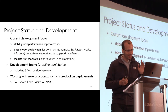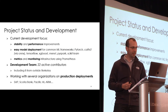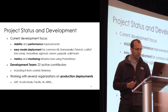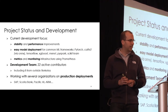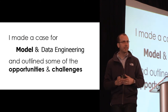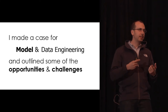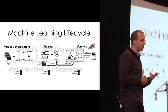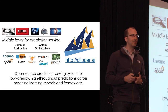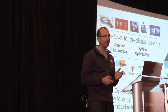We've focused on easy model development, now have support for a wide range of common machine learning frameworks, and have introduced a lot with metrics and monitoring. The project is under active development with 22 contributors including 8 industrial groups. We're working with production deployments in SAP, Scotiabank, Pacific AI, and ARM. I'll conclude by saying I've made a case for model and data engineering, and the opportunities and challenges we've outlined will transform how we build machine learning pipelines in the future. It's an exciting area for research and building systems.